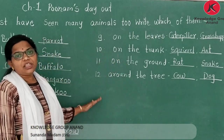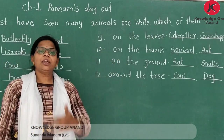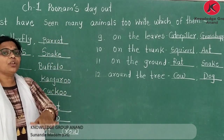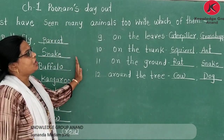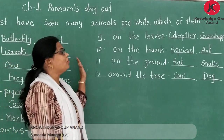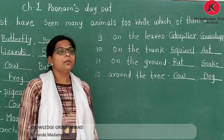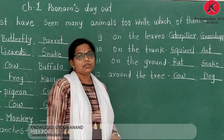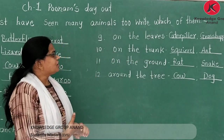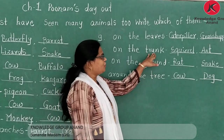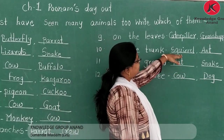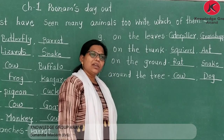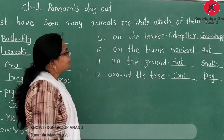It is important that what I have mentioned here — wohi aapko learn karna hai aur wohi aapko likhna hai. But extra animals that you know, aap woh bhi mention karne hain. Ten number is 'on the trunk.' On the trunk — trunk pe jo rehte hain, this is the squirrel and ant. So many animals also live on the trunk.